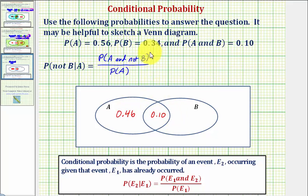And the probability of B equals 0.34. And again, this is included in the 0.34. So the probability of only B would be 0.34 minus 0.1, or 0.24.